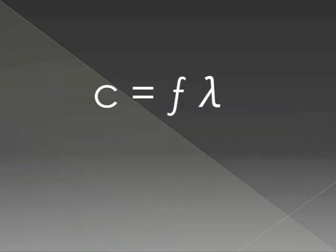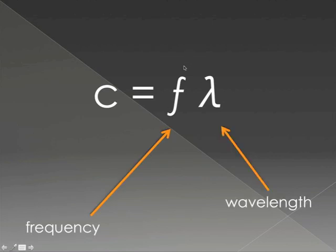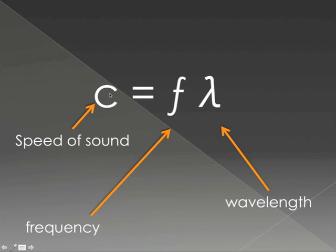More important for ultrasound, and more commonly discussed, is frequency. The equation shows how frequency and wavelength relate to the speed of sound: F times lambda equals C, where F is frequency, lambda is wavelength, and C is the speed of sound in tissue. Given that the speed of sound in tissue is relatively constant, as you decrease the wavelength your frequency increases, and vice versa, because their product is always relatively stable.